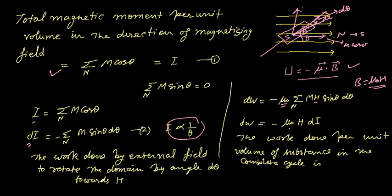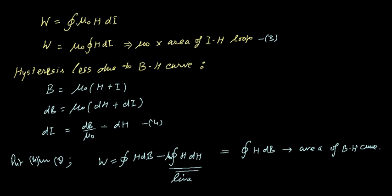So we can write dW is minus μ₀H dI. By rotating this dθ angle, the work done is dW. If we have to find out the total work from zero to θ, then we have to integrate it overall. So integration of μ₀H dI.